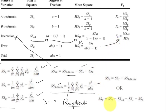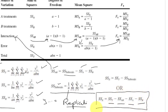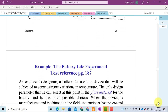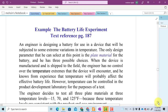Once we have SS_Total, SS_A, SS_B, and SS_AB, we calculate SS_Error by subtracting all other sums of squares from SS_Total. This has been the approach from day one: SS_Error is always calculated by subtracting the other sums of squares from the total sum of squares.